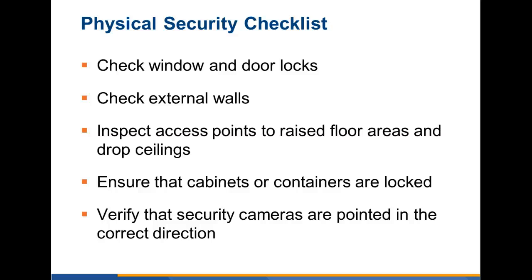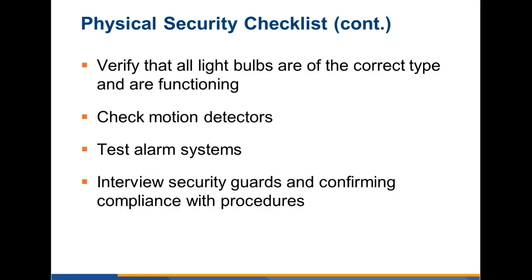Your physical security checklist should include checking window and door locks, external walls, and inspecting access points to raised floor areas and drop ceilings. Gaining access through a ventilation shaft sounds like something from a Mission Impossible movie, but it can happen and these need to be inspected. Also check that cameras are pointing in the correct direction — you'd be surprised how many aren't. Verify that all light bulbs are the correct type and functioning, check your motion detectors, test your alarm systems, and interview security guards to confirm compliance with procedures.